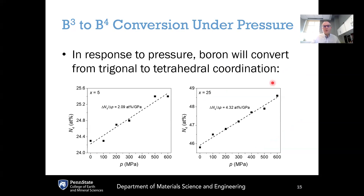This conversion from three-fold to four-fold coordination can also occur under pressure. Pressurizing the glass can convert the local structure of a borate or borosilicate glass from a more open structure with more threefold coordinated boron to a more compact structure with more fourfold coordinated boron. As a function of applied pressure, N4 — the fraction of fourfold coordinated boron — increases in these borate glasses.